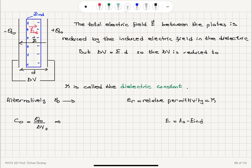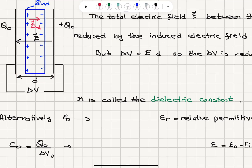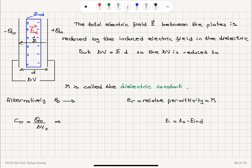The total electric field between the plates is reduced by the induced electric field, and the potential difference ΔV between the plates equals the total electric field times the distance between the plates in absolute value. So ΔV is reduced, and the new potential difference is equal to the original potential difference ΔV₀ divided by some factor kappa.